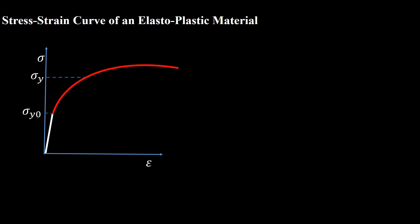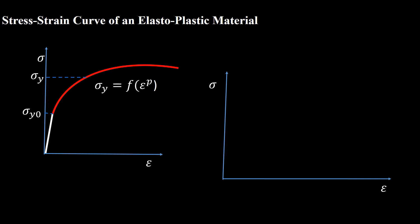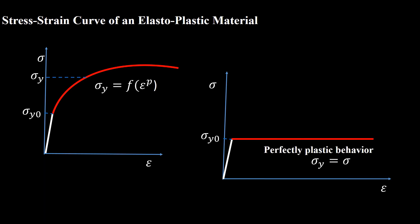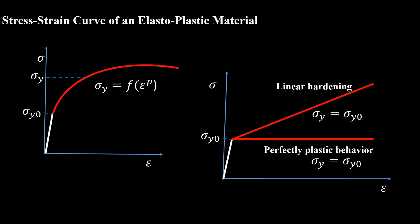After the yield point, the flow stress increases with increasing plastic strain — this behavior is known as strain hardening. In this region we can express flow stress as a function of plastic strain. The simplest assumption is that flow stress is constant, which is called perfectly plastic — in this case there is no hardening. It is also common to assume that flow stress is a linear function of plastic strain, known as linear hardening.